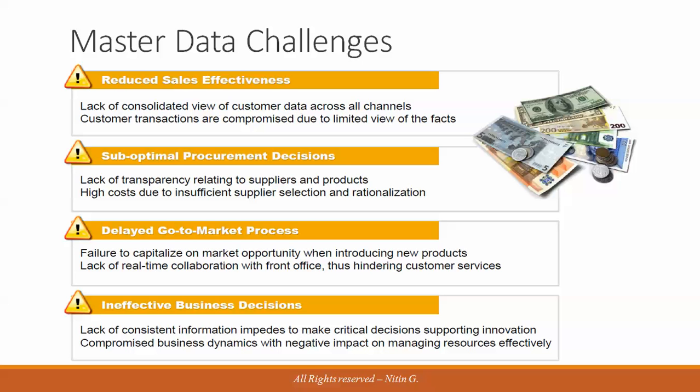Suboptimal procurement decisions are another challenge. There is no transparency around suppliers and their products. You might assume a product isn't available from a supplier when it actually is, leading to poor supplier selection or rationalization — and ultimately paying more money to suppliers.